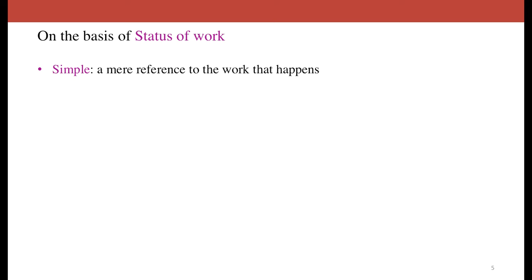Now let us discuss what we mean by the status of work. Work may simply refer to an action that happens or a state that is held. For example, 'Bob eats' — here 'eats' is the verb, but it does not mean Bob is still eating or has just completed eating. It is a habitual action, a simple reference to something that Bob does. Similarly, 'They dance' does not mean they are right now doing this thing or have just completed it. It is a simple reference to something they do, and since it's a simple reference, it becomes the simple tense.